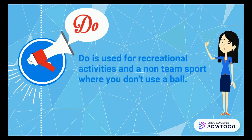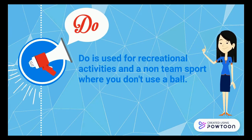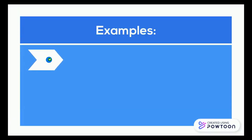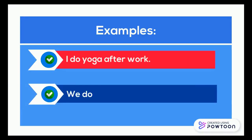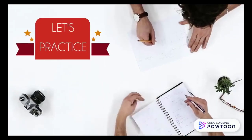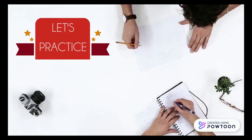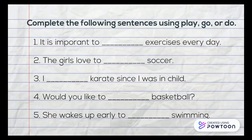Do is used for recreational activities and non-team sports where you don't use a ball. For example: I do yoga after work. We do aerobics at the gym. Now is your time to practice, so let's go. Complete the following sentences using play, go, or do.